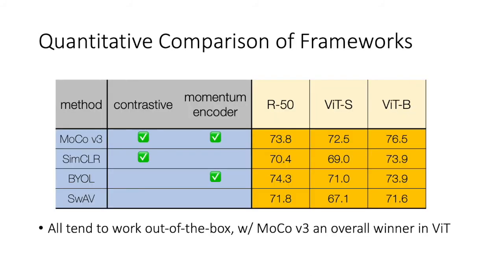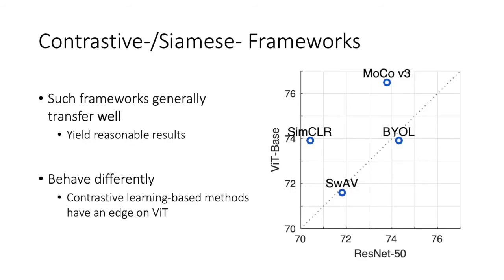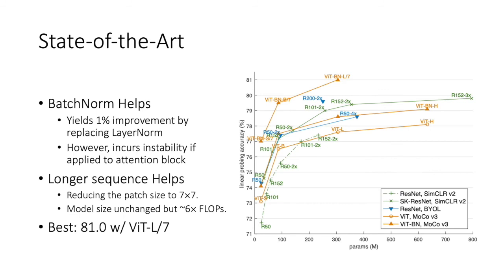We benchmarked self-supervised ViT in four different frameworks: MoCo v3, SimCLR, BYOL, and SwAV. We use the same random projection trick in all cases. MoCo v3, which is contrastive-based and uses a momentum encoder, achieves better accuracy on ViT than the other frameworks. We also find that different frameworks behave differently. From the figure, we can see that MoCo v3 and SimCLR are more favorable for the transformer backbone than the ResNet backbone. We are able to obtain state-of-the-art results of 81% top-1 accuracy in ImageNet linear evaluation by adopting two additional strategies.